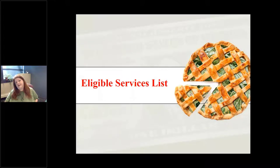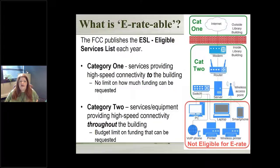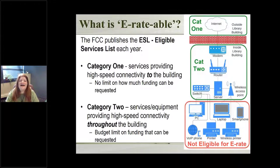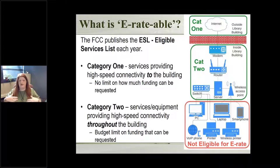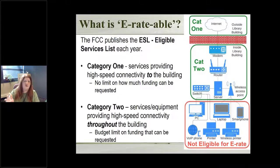So what can you get a discount on? The eligible services list tells you that. Every year the FCC publishes their ESL — eligible services list — and it tells you what is E-rate-eligible. There's a new list every year, so when applying for E-rate make sure you look for the correct list for the year you're applying for. It hasn't changed much over the last few years, but always try to look for the most recent one. They update it annually to include any new technology, new services, or new equipment for providing internet — because technology changes over time and the FCC does understand that.